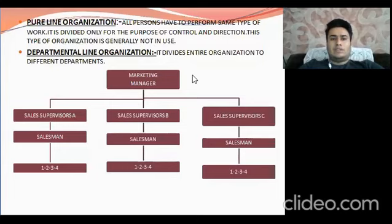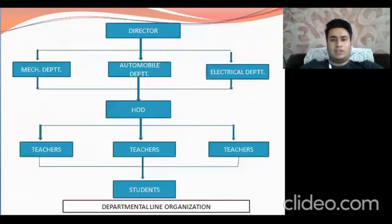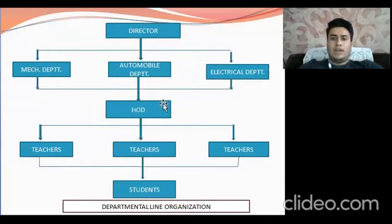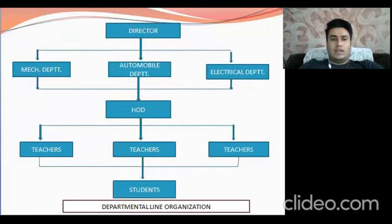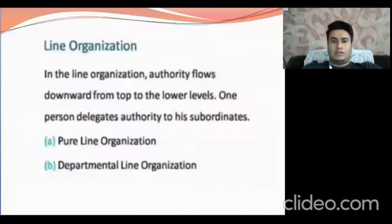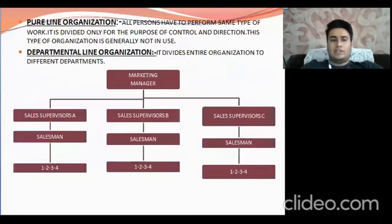Departmental line organization is divided into different departments. In the flow chart, you will see three departments on top, five departments below that, then three departments, and four more at the next stage. These are the two types of line organization: pure line and departmental line organization.